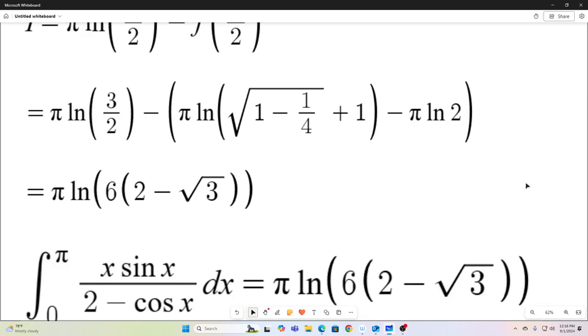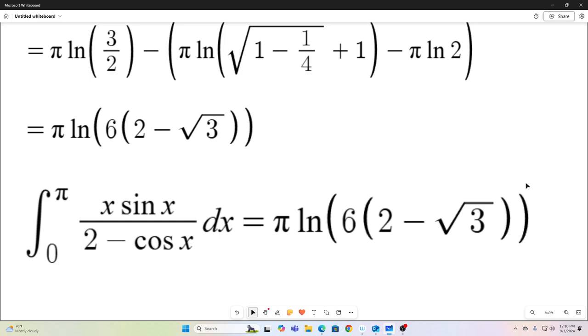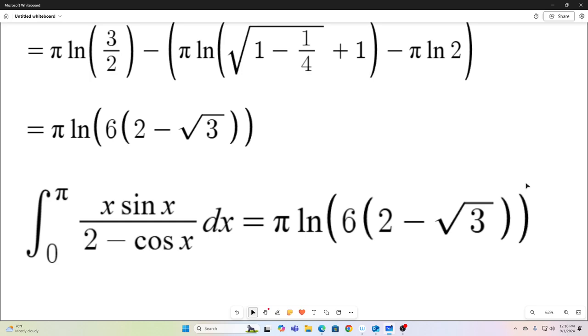So in conclusion, this is true. The integral from 0 to π of x times sin x all over 2 minus cos x dx is equal to this. Well, there you go guys. I hope you enjoyed that, and we will see you next time.